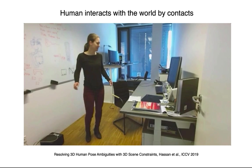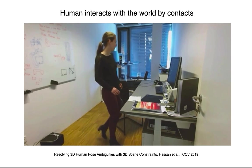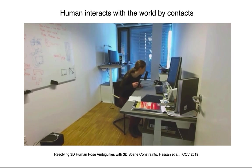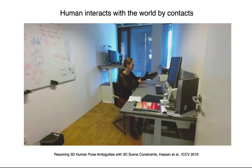Humans interact with the scene in various ways, but the common thing is that all interactions are rooted in body-scene contexts. Let's focus on the interaction between the girl's right hand and a keyboard. When the hand interacts with the keyboard, the distance from the hand to the keyboard keeps changing and becomes zero when contact happens.